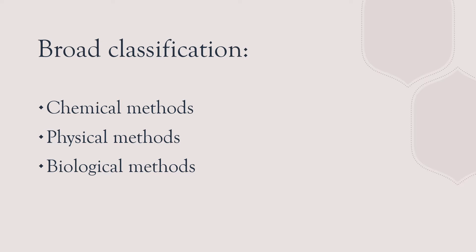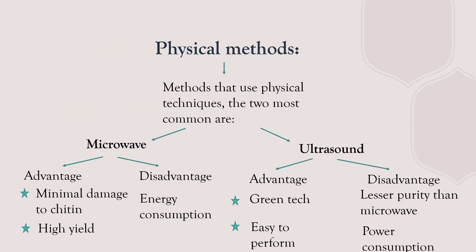Extraction methods can be divided into chemical, physical, and biological methods. For physical methods, the most common these days are microwave and ultrasound, which have similar advantages and disadvantages. The damage to chitin is not that much, yield is quite high, but there is significant energy consumption. Ultrasound has slightly less purity than microwave, but it is easy to perform and is considered a green technology that avoids the use of chemicals.